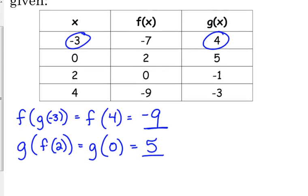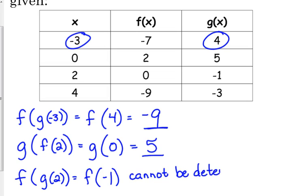Let's do f of g of 2. Let's change the order of that. What is g of 2? Negative 1. What's f of negative 1? Nobody knows? I don't know. Somebody knows, but I don't know. They didn't give me enough information. This cannot be determined. Sometimes that happens.